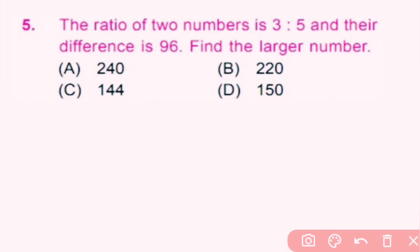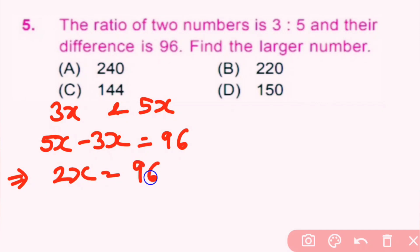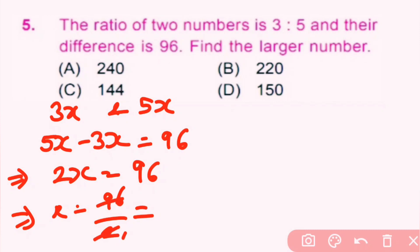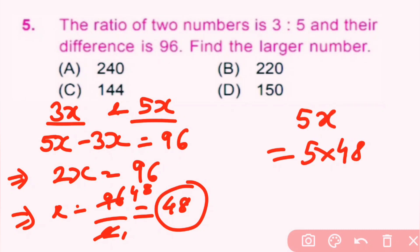Question number 5: the ratio of two numbers is 3:5 and their difference is 96. Find the larger number. Let the numbers be 3x and 5x. Their difference: 5x minus 3x equals 96, so 2x equals 96, giving x equals 48. The larger number is 5x, so 5 into 48 equals 240. Answer a is correct.